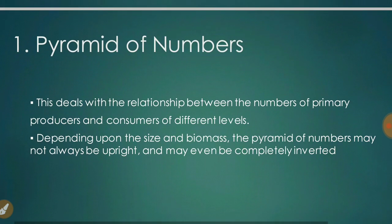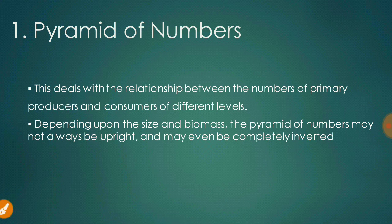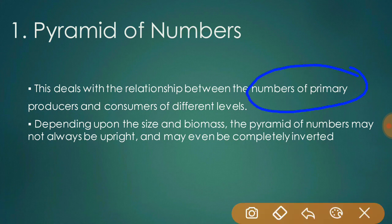There are three categories of ecological pyramids: pyramid of numbers, pyramid of biomass, and pyramid of energy or productivity. The pyramid of numbers deals with the relationship between numbers of primary producers and consumers at different levels. It is a graphic representation of the total number of individuals of different species belonging to each trophic level. Depending upon the size and biomass, the pyramid of numbers may not always be upright and may even be completely inverted.